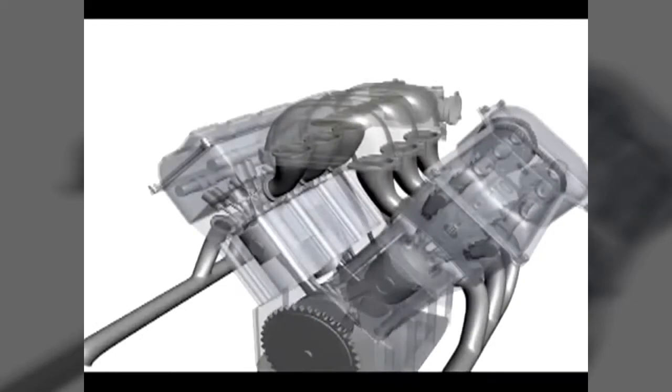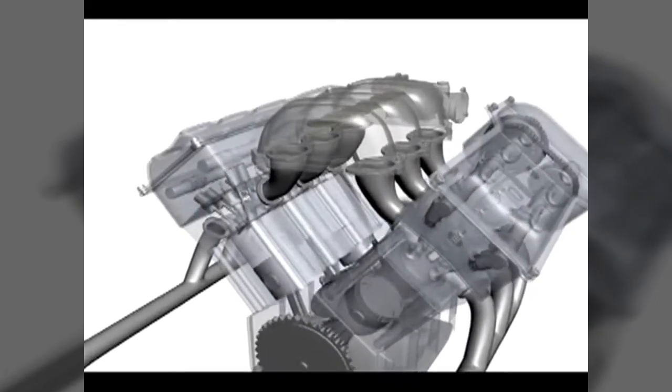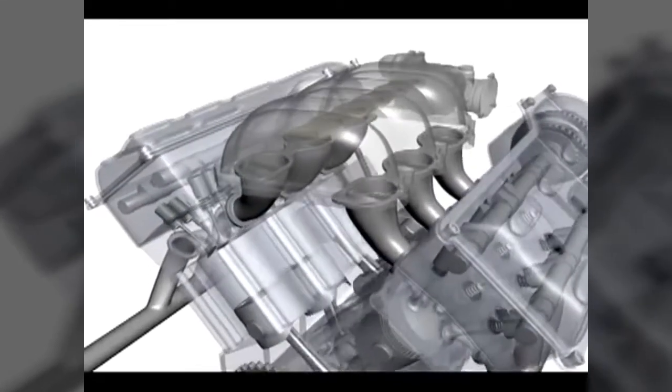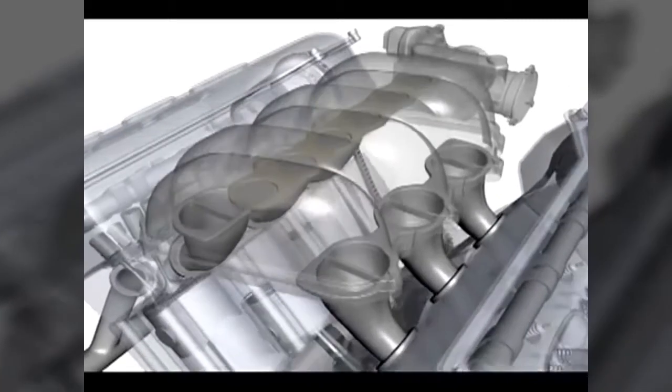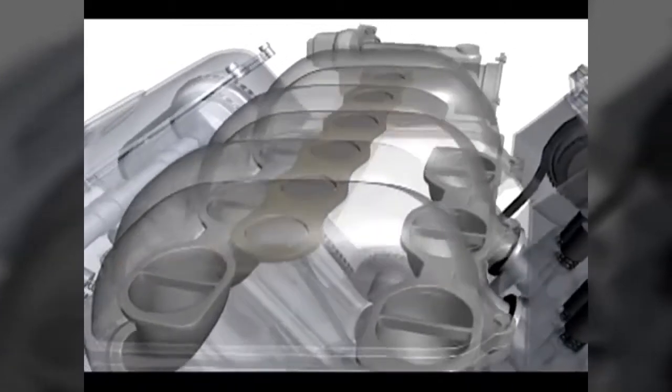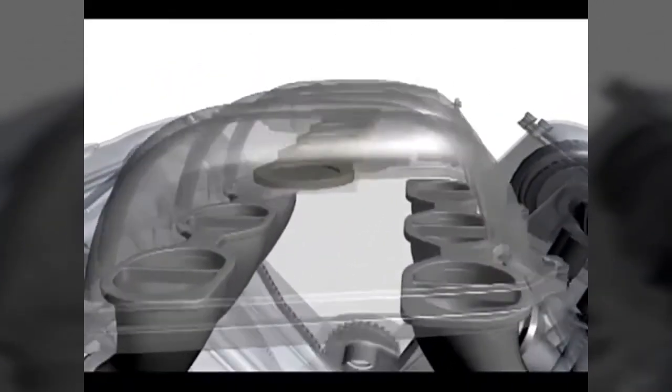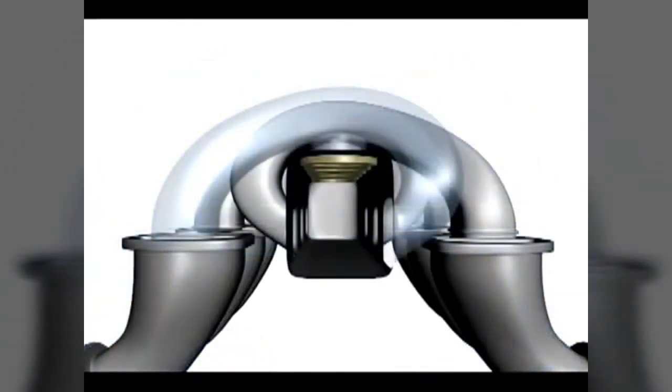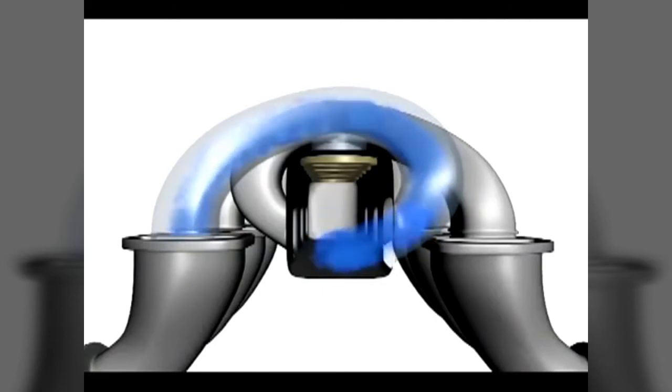An acoustic control induction system, or ACIS, automatically varies the length of the runners in the intake manifold to maximize the airflow into the engine and to provide more usable power throughout the entire RPM range. At low speeds, ACIS directs intake airflow through a long intake runner in order to produce ample low-end power and torque. Think of this as taking deep breaths while lifting a heavy object.